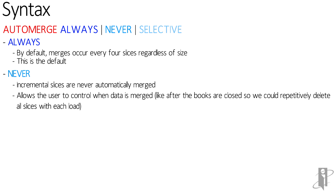The best use case for never is during a close cycle where we want to reload the GL data throughout the month. We want to basically delete all of the slices and reload them, because it's much quicker. So we could repetitively delete, slice, delete, slice, reload the data. And then once the data is finalized, we want to merge it in.